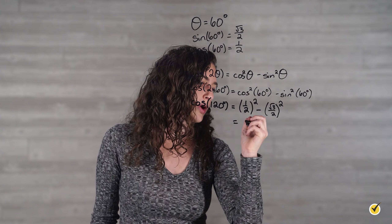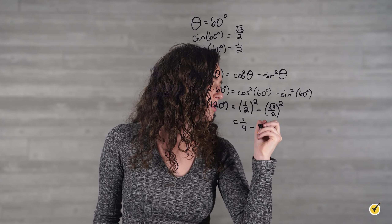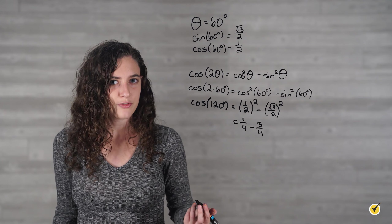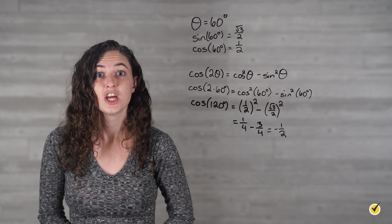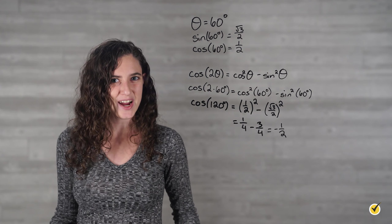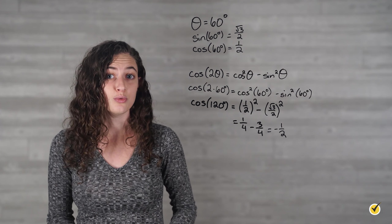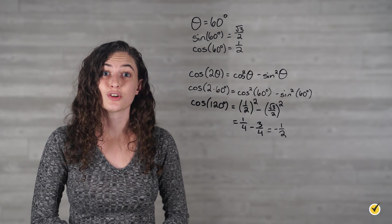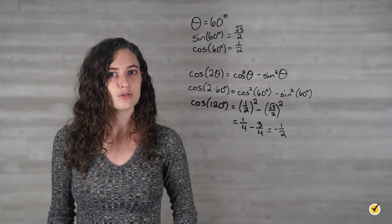So 1 half squared is 1 fourth, minus the square root of 3 over 2 squared, which is 3 over 4. Finally, we subtract our fractions and get our answer of negative 1 half. Checking the unit circle, we see that the cosine of 120 degrees is negative 1 half, so we're right. This is actually one of those cases where the calculator will give us the exact value too, since it's a rational answer. Also note that the cosine of 120 degrees is negative because 120 degrees is in quadrant 2, where cosine is always negative.